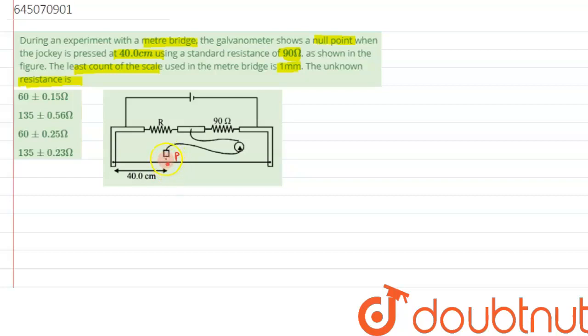Let's say this point is P, and at this point while touching the jockey, the galvanometer is showing null deflection. So if this is 40 centimeters, then this distance will be 60 centimeter. This is our length of right side and this is our length of left side.